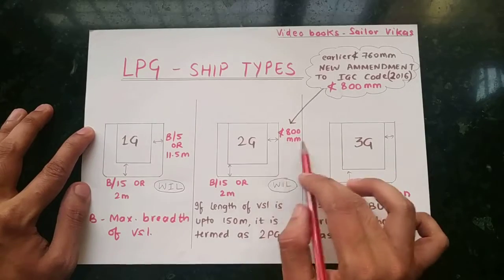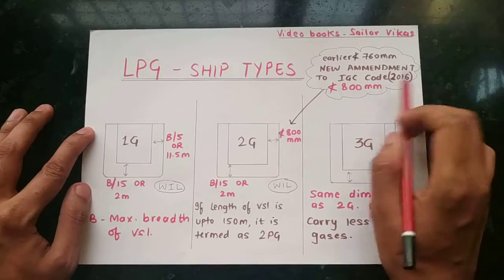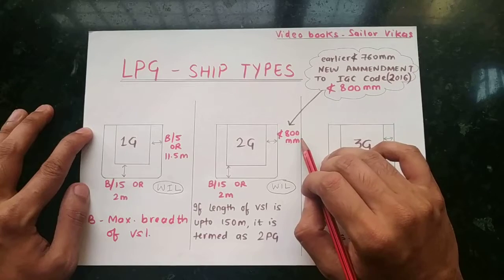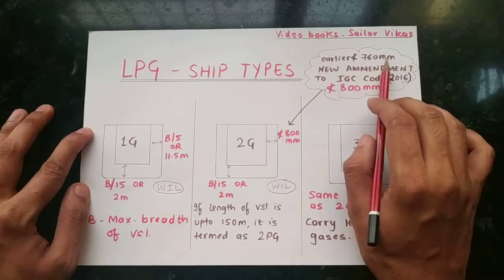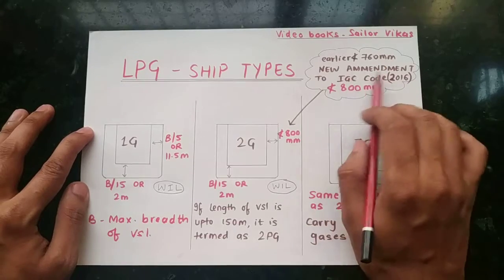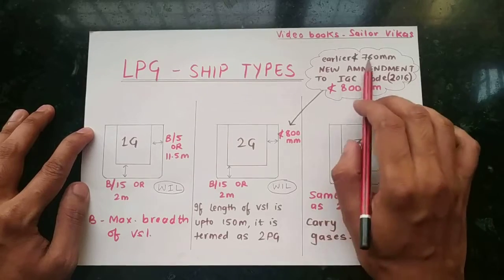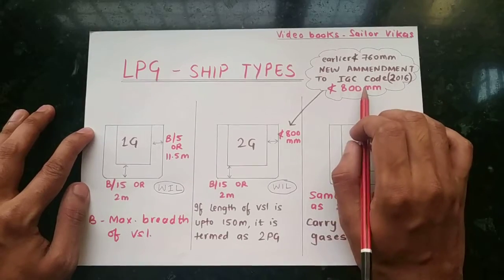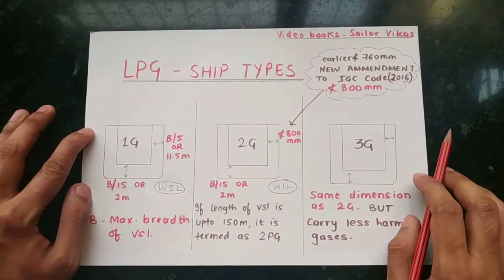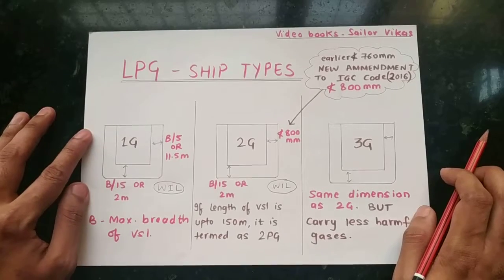For 2G, the side distance is not less than 800 mm. This is an important point: the value was originally 760 mm, but after the new amendment in the IGC Code 2016, this changed from 760 mm to 800 mm. This is an important topic to remember as far as orals are concerned.